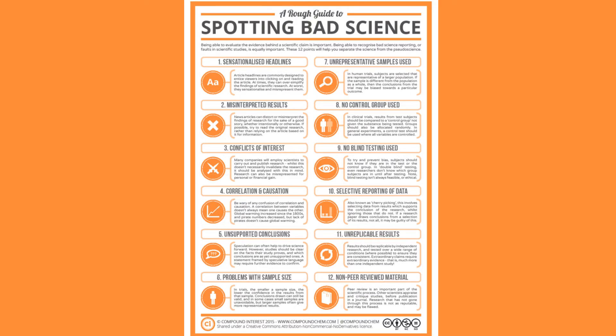This rough guide to spotting bad science is something a colleague sent my way a few years ago, and I think it's a great concise presentation of the most common ways scientific data can be misinterpreted. There's a link in our course site to an easier-to-read copy of this document. A lot of these things have to do with how scientific findings are communicated, such as sensationalized headlines and misinterpreted results.